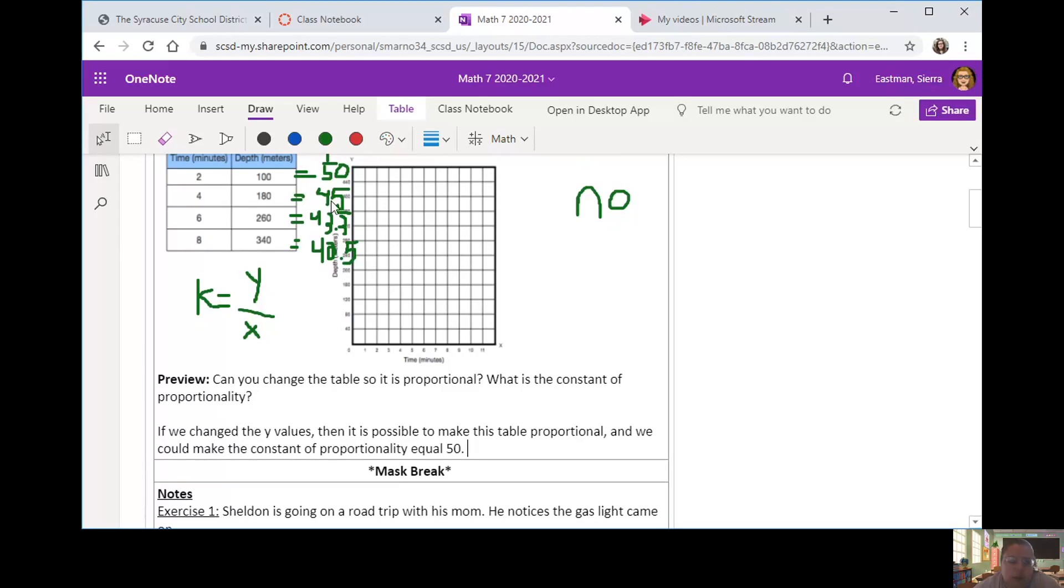So we could change it so that they all equal 45, or we could change it so that they all equal 42.5. It doesn't matter which constant of proportionality you would choose, but it would be possible to change it to make it proportional and then have them all with the same constant.